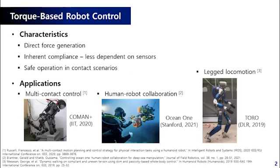First, I'll briefly talk about torque-based robot control. It commands the desired torque to the actuator instead of joint angle, and the task force is directly generated by the commanded torque.